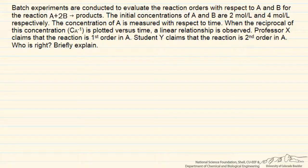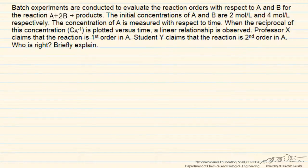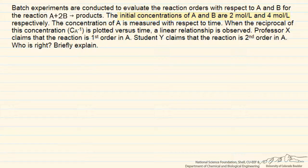This problem deals with the analysis of some batch kinetic data for the reaction A plus 2B reversibly going to products. The initial concentration of B is twice that of A, and a measurement of the concentration of A is made with respect to time. When the reciprocal of that concentration is plotted versus time, we get a straight line relationship. Based on that, we have competing claims about what that means in terms of the reaction orders with respect to component A.